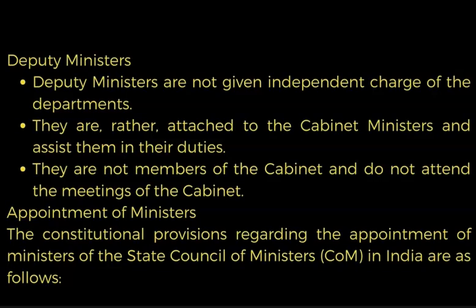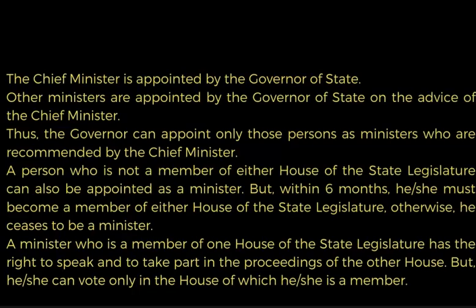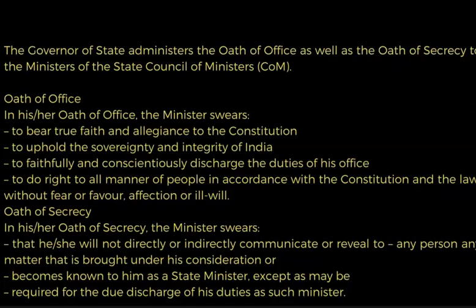Regarding the appointment of ministers, the constitutional provisions are as follows: the Chief Minister is appointed by the Governor of the state; other ministers are appointed by the Governor on the advice of the Chief Minister. Thus the Governor can appoint only those persons as ministers who are recommended by the Chief Minister. A person who is not a member of either house of the state legislature can also be appointed as a minister, but within six months he or she must become a member of either house of the state legislature, otherwise he or she ceases to be a minister. A minister who is a member of one house of the state legislature has the right to speak and take part in the proceedings of the other house, but can vote only in the house of which he is a member.